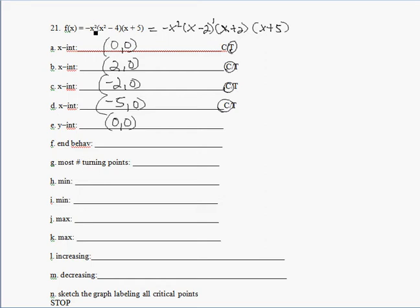My end behavior model, if I was to multiply this out, I get negative x squared times x squared times x, which is negative x to the fifth. So my end behavior model, you always want to write y equals negative x to the fifth, not just negative x to the fifth. Since it's a fifth-degree polynomial, the greatest number of turning points I can have is 4.